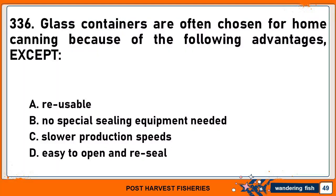Glass containers are often chosen for home canning because of the following advantages, except: A. Reusable. B. No special sealing equipment needed. C. Slower production speeds. Or D. Easy to open and reseal. The correct answer is C. Slower production speeds. Glass containers are reusable, do not need special sealing equipment, and are easy to open and reseal after opening.